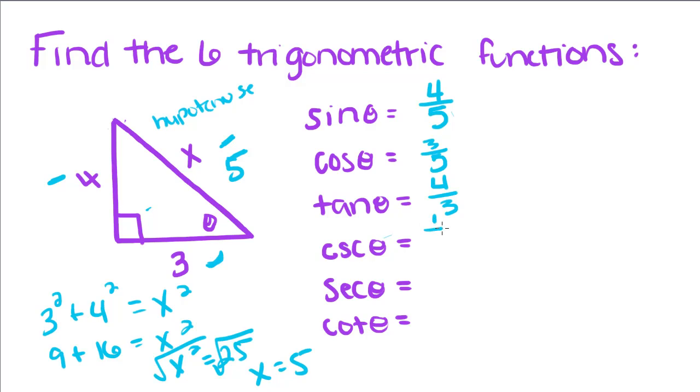Cosecant is 1 over 4 over 5, because this is what sine is. So, 1 times 5 over 4. So, cosecant is 5 over 4. Or, you can think of it as hypotenuse over opposite.